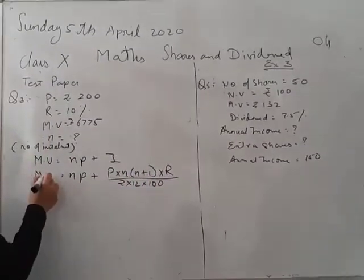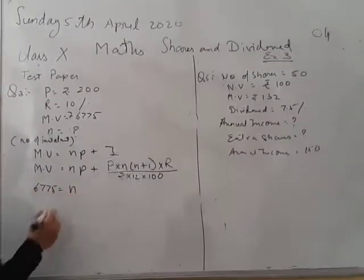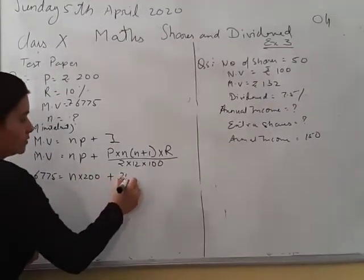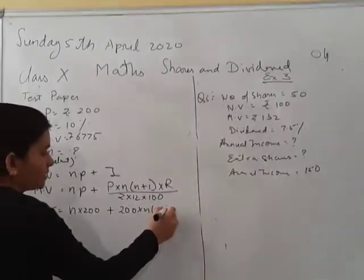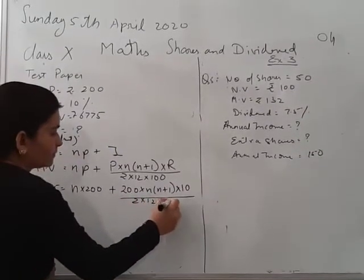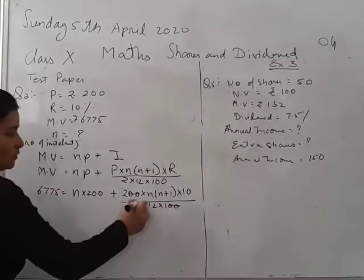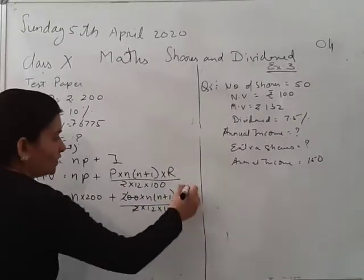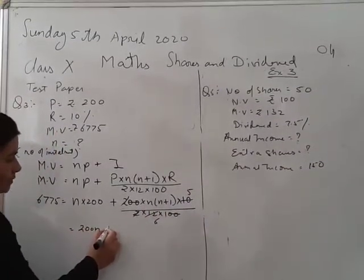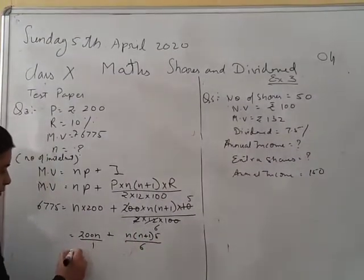Now substitute the values. Maturity value is 675, number of installments we don't know, and the monthly installment is 200. So it becomes 200N plus 200 into N(N+1) into 10 upon 2 into 12 into 100. Simplifying: the 200 will cancel with the zeros, 2 and 2 cancel, giving us 200N plus N(N+1) into 5 upon 6.